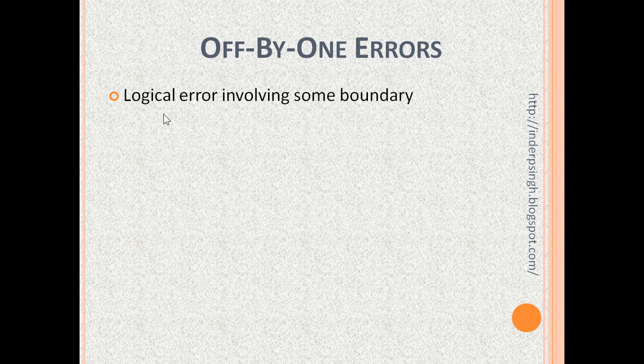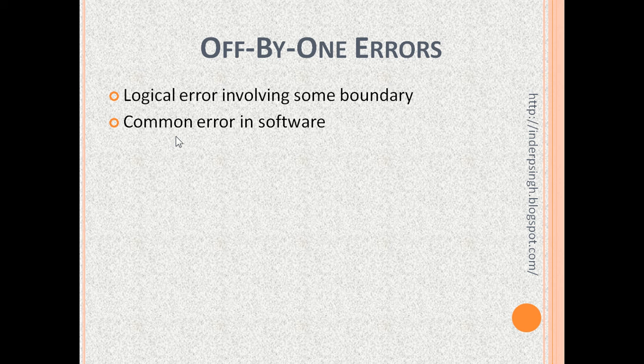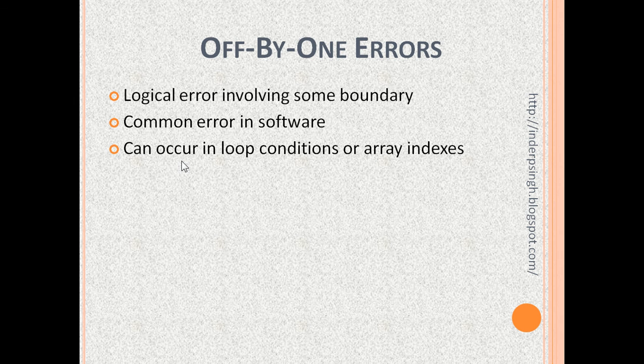What is an off-by-one error? It is a logical error involving some boundary. Off-by-one errors are common in software because they're easy to make when writing code. These errors can occur in loop conditions or array indexes.